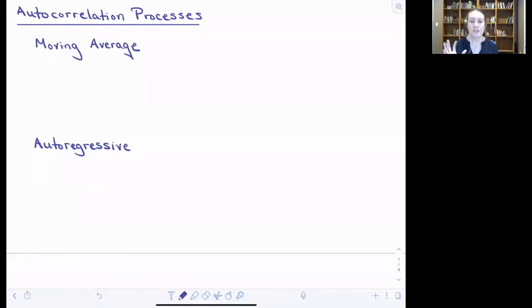There are two different types of autocorrelation processes where a time point in the past can have an influence on a time point in the future. These two different general types of processes are called a moving average process and an autoregressive process.